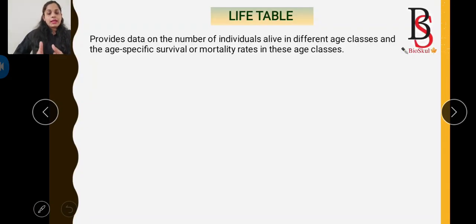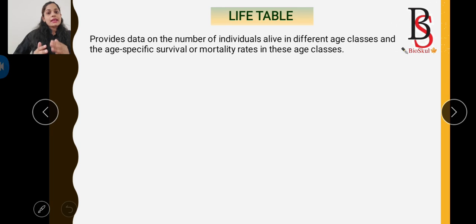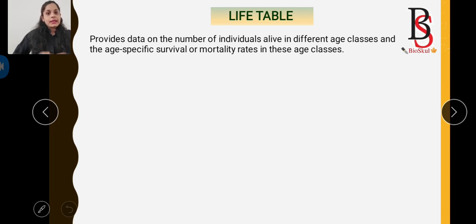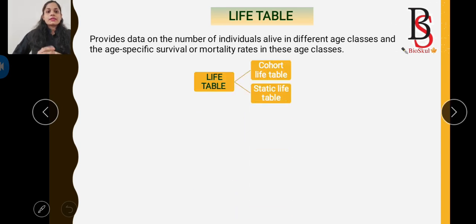What is a life table? A life table provides data on the number of individuals alive in different age classes, and the age-specific survivability and mortality rate in those classes. Life tables are of two types: the cohort life table and the static life table.